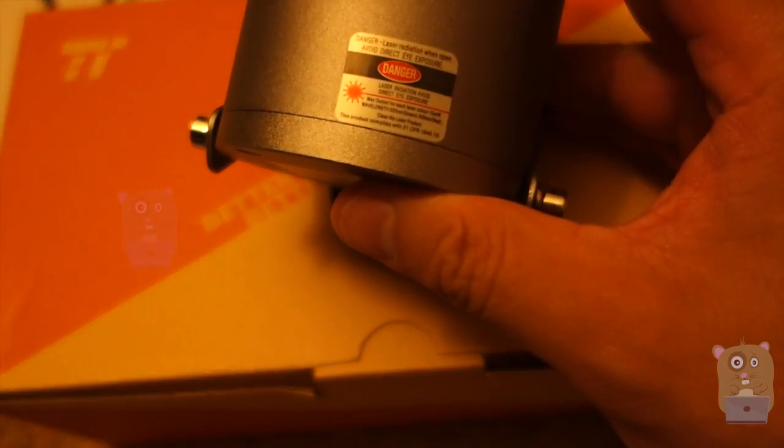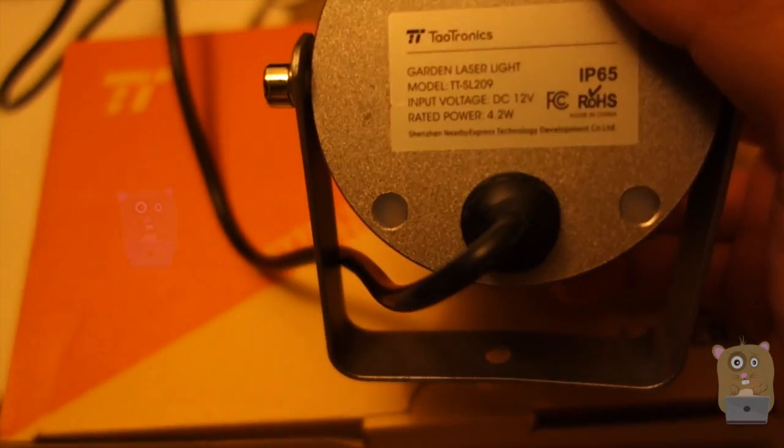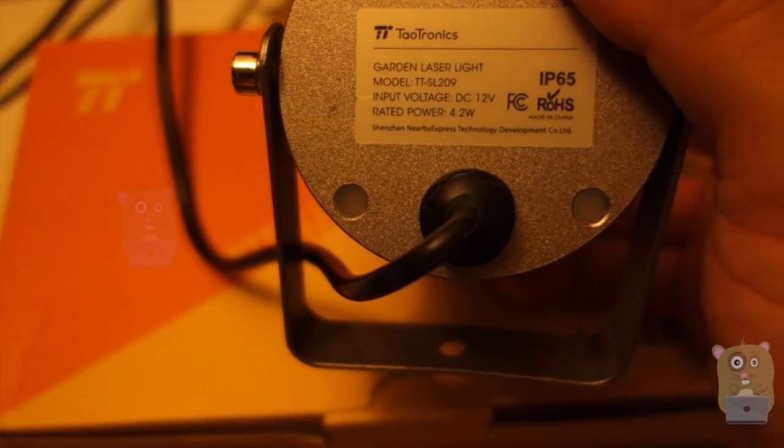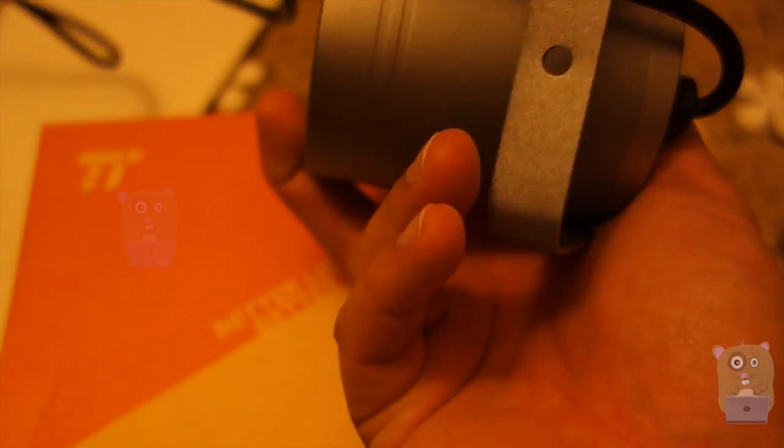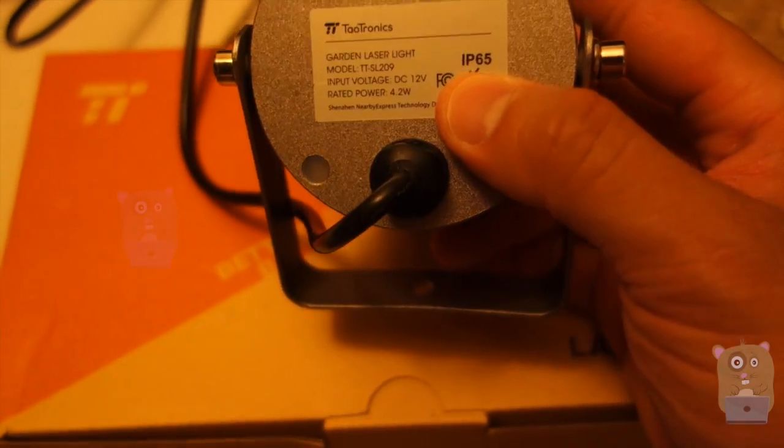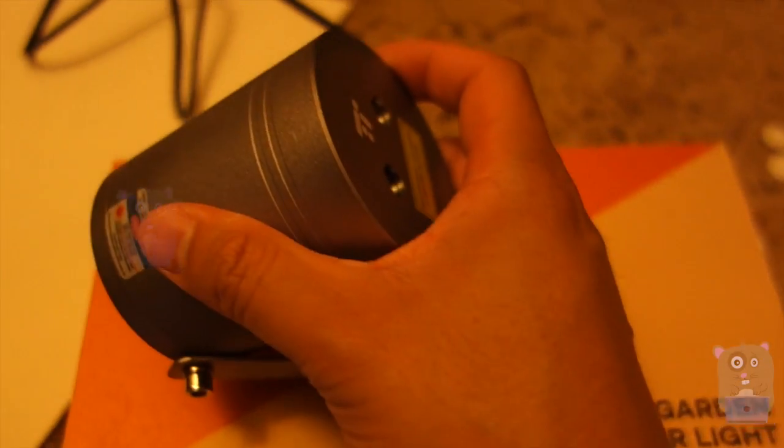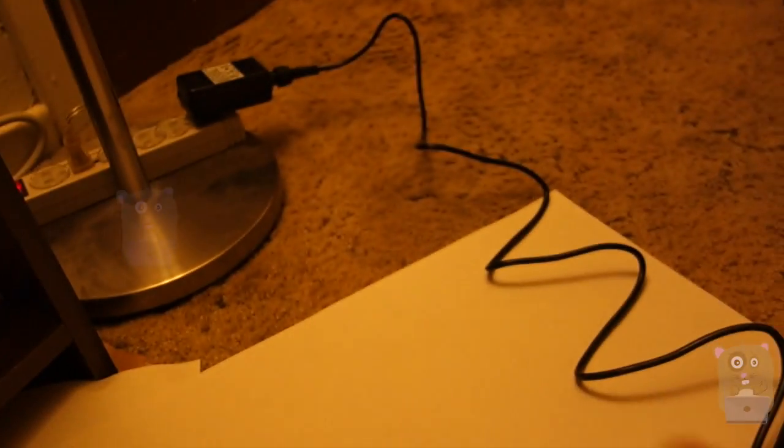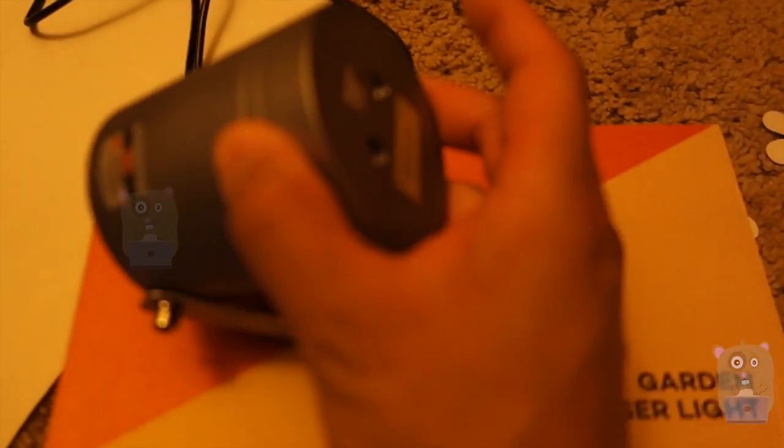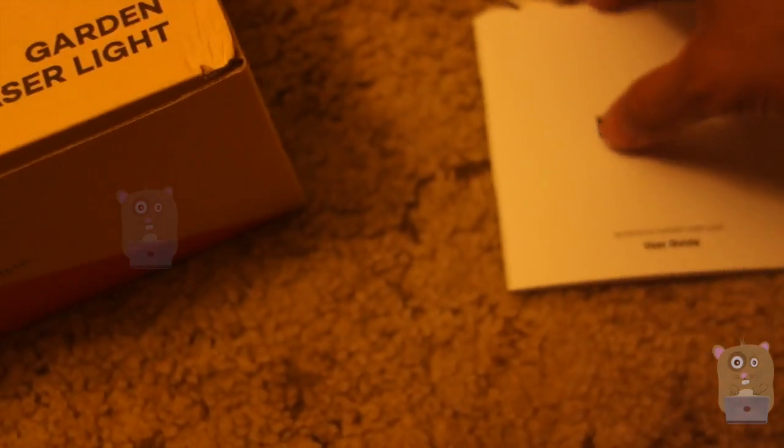Here's the laser light. Some information printed on the back over here. It is weather resistant, IP65 rated. The power cord is actually quite short - it's only about four to four and a half feet in length.